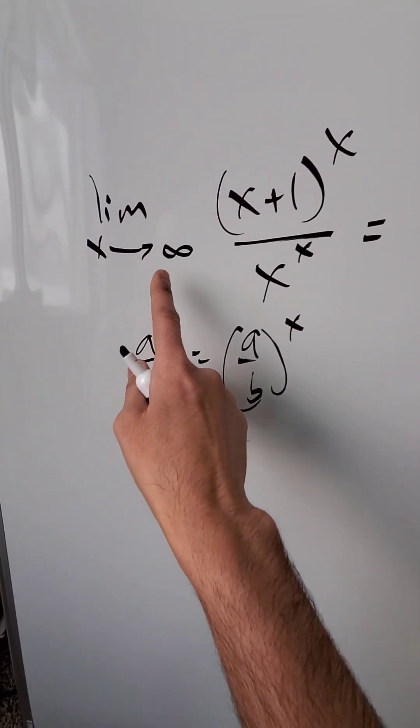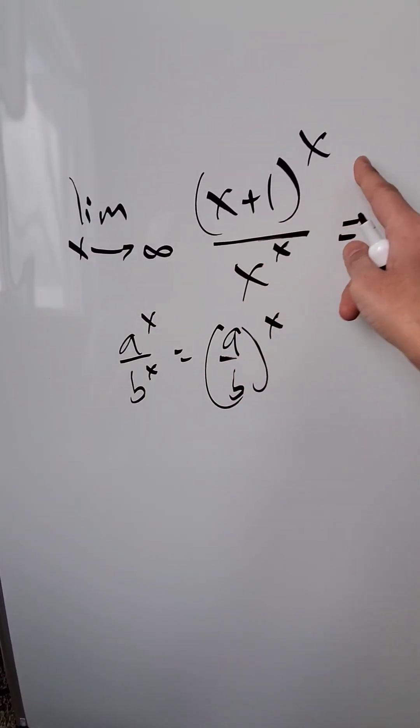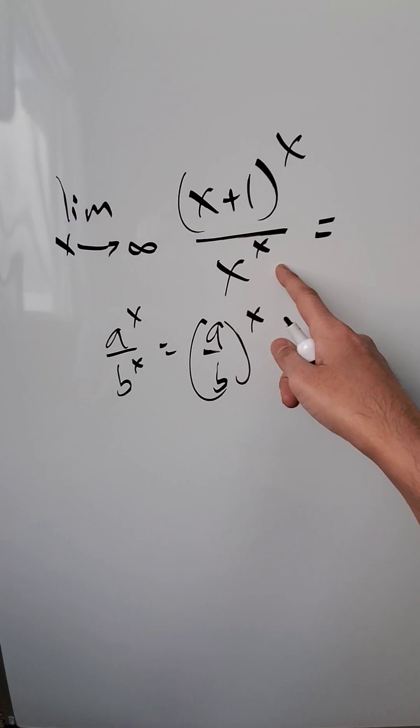Look here at this limit. Limit as x approaches infinity: x plus 1 to the power of x divided by x to the power of x.